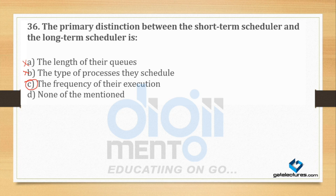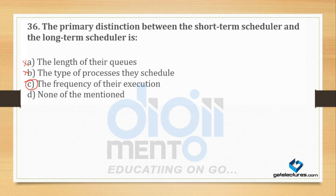Long term scheduler will not execute as often, but short term scheduler will execute a lot. Why? Because short term scheduler decides which process moves from ready state to running state. When a process is running, it goes back into ready queue. So the frequency of execution of short term scheduler will be more than long term scheduler. New state to ready state is long term, but ready to running is short term. The frequency of execution is more for short term — this is the right answer and the primary distinction.